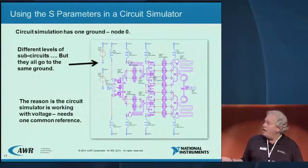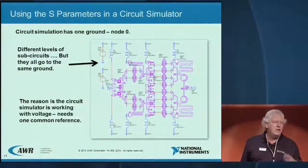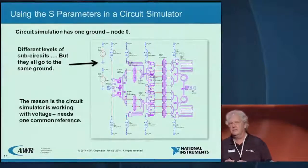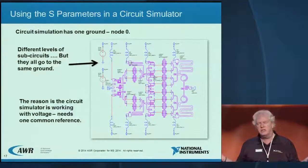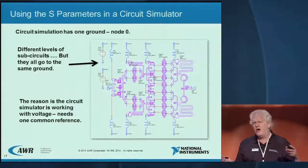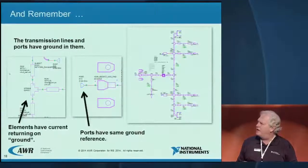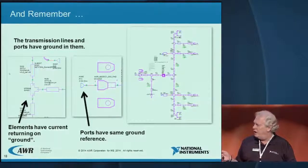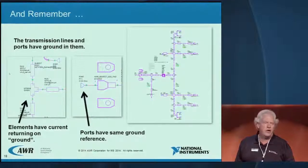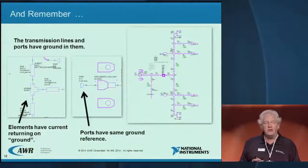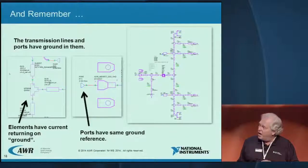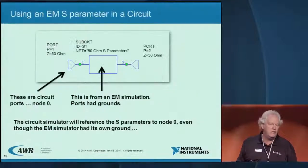Now, going back to our MIMIC on board: there's your MIMIC — that's a circuit simulation with a ground — it's node zero on your netlist. A circuit simulator only has one node zero. So how can it deal with S-parameters whose ground is on the MIMIC and another whose ground is on the board, when it only has one node zero? Also, sometimes people forget: the transmission line elements in the schematic have a ground assumption too — there's an assumed ground plane, even if you don't see it. Every one of your ports has a ground assumption.